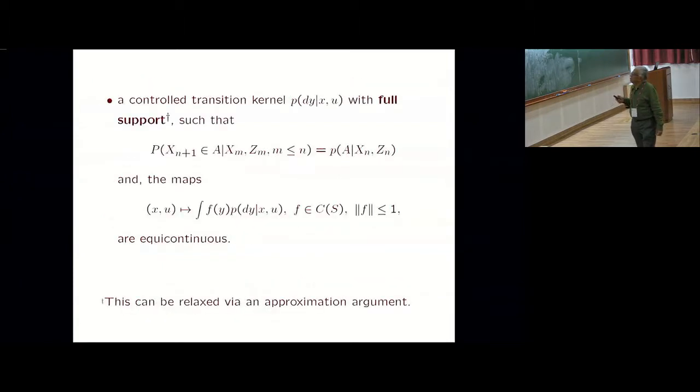There's a control transition kernel, which I'm currently assuming has full support - any open set in the state space will have strictly positive probability. This I'll return to later. It can be relaxed. If your current state is X_N and your current control is Z_N, then probability of being in set A at the next time is given by some kernel like this.